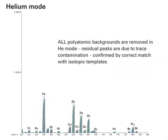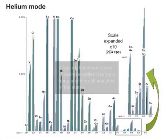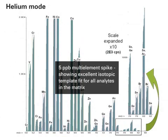Now watch what happens when helium is added to the cell. All matrix-based interferences are removed. The remaining elemental peaks are due to parts per billion level contamination in the matrix, confirmed by the correct isotopic template fit. Helium mode has removed all polyatomic interferences simultaneously. Adding a 5 parts per billion multi-element spike confirms all analytes are easily measured in this very complex sample matrix.